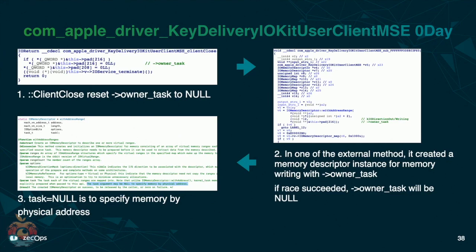Here's the detail of this vulnerability. When the user client closes, it will clear the owner task variable. And in one of the external methods, it uses the same variable to create a memory descriptor to write data into a specific task. With the race condition, we can clear the owner task variable before it's used to create a memory descriptor. This way, everything remains the same except the memory descriptor that's supposed to point to the virtual memory of the task now points to the physical memory. It's hard to exploit because you can't control the address it writes into physical memory.